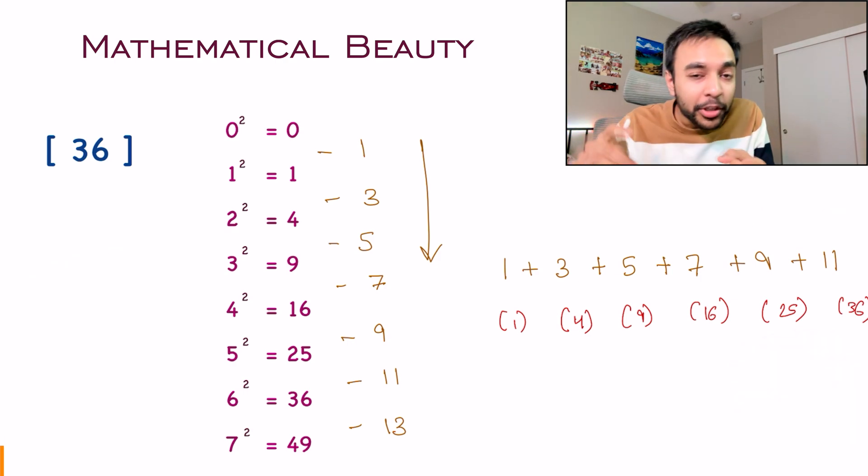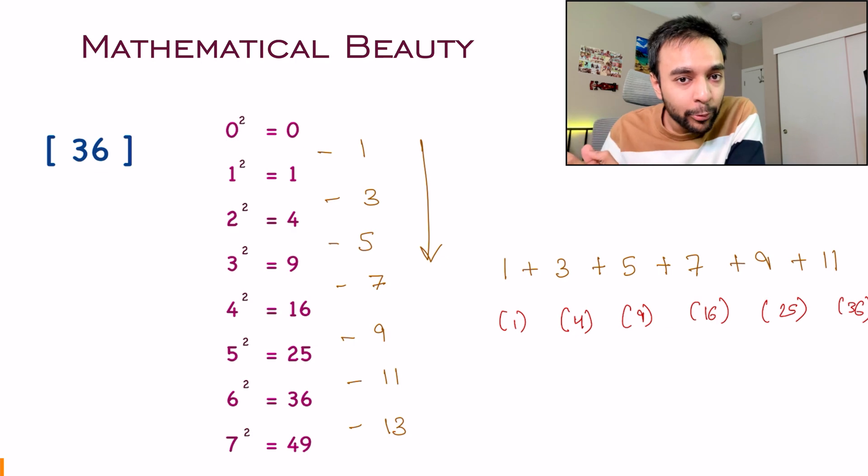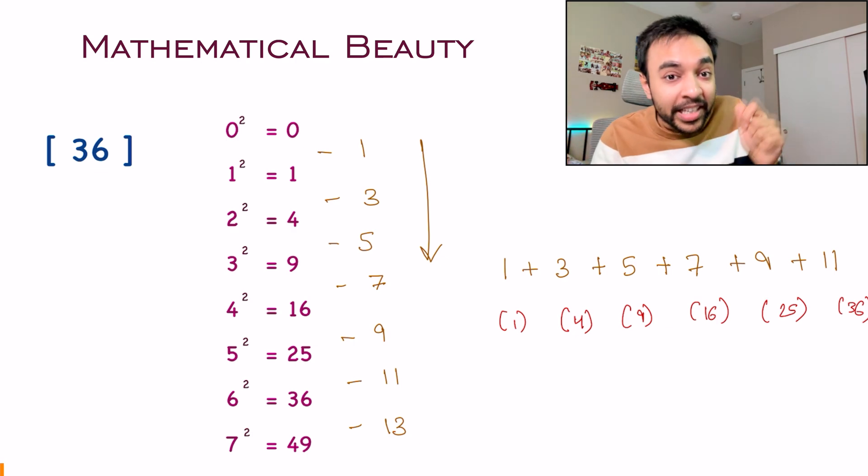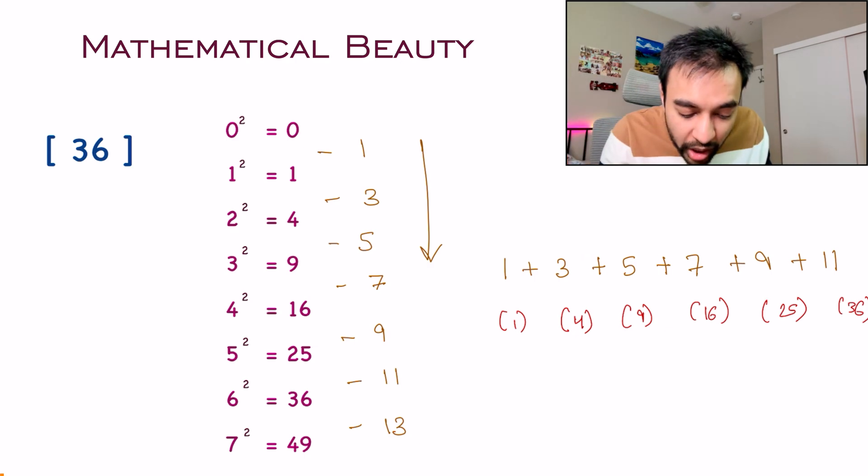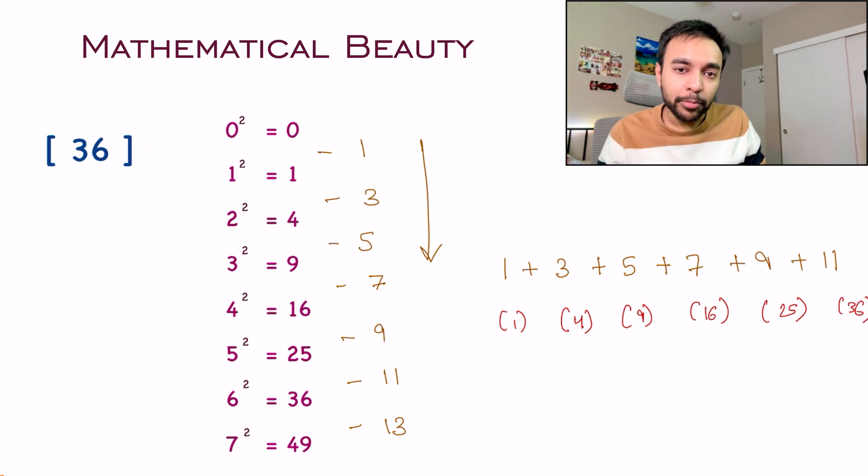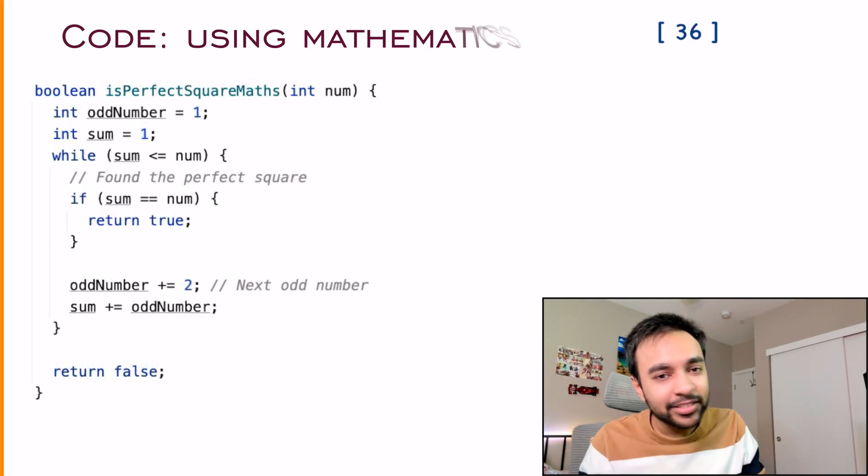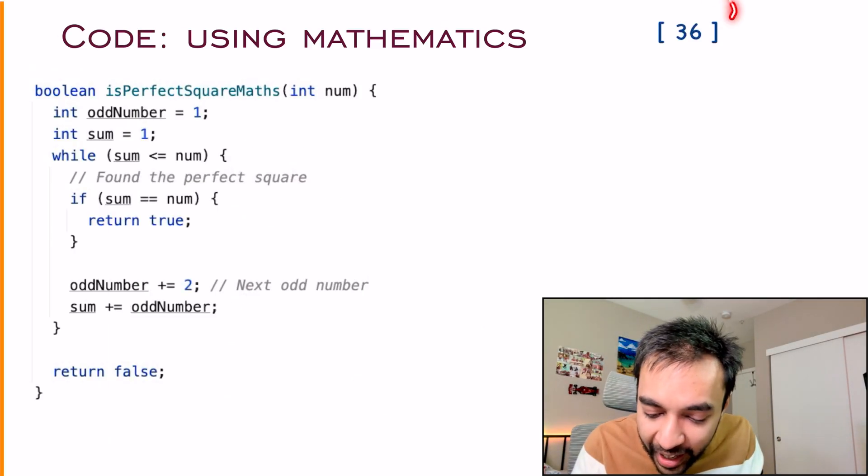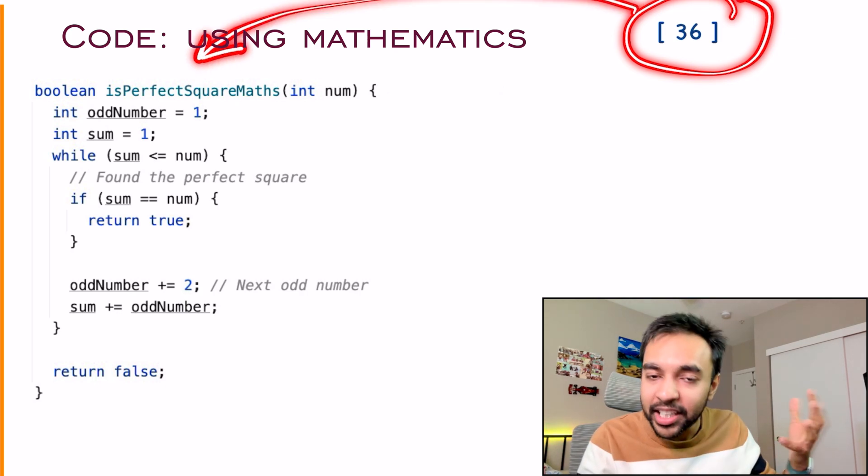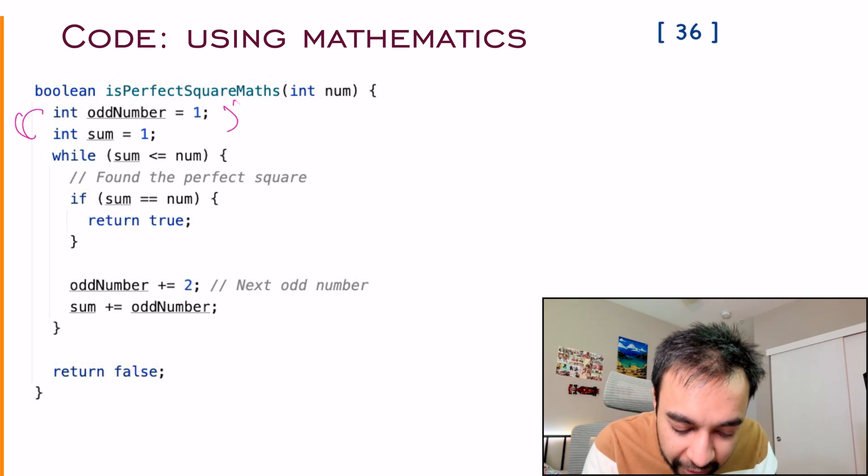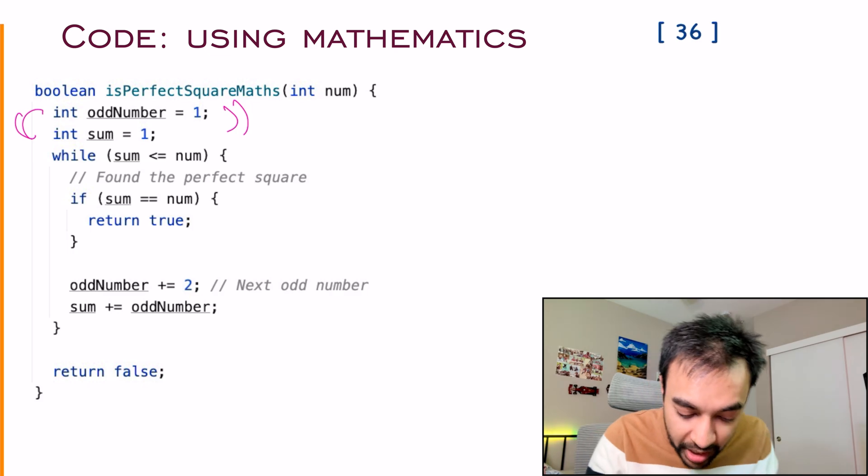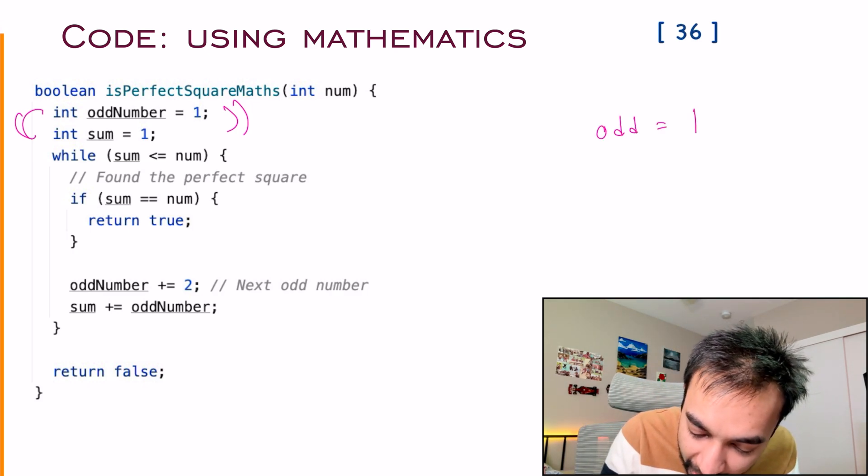This approach works in an order of square root of n time complexity. Because you will keep on iterating until you reach the square root value of the input number. Even for this approach, let's quickly take a look at the code. This is gonna be super fun and super simple. I have this input number over here and it is passed in as an input parameter. Now what do you do? In the first step, I take up what my starting odd number is and what is my starting sum. So odd number equals to one and sum is also one.